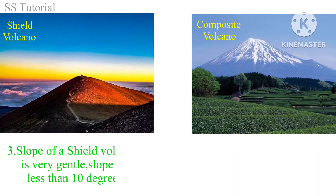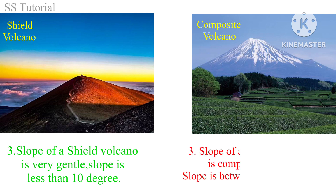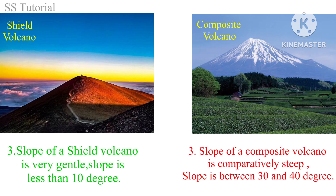As highly fluid lava erupts from a shield volcano, it flows greater distances before it solidifies, which results in a very gentle slope. The slope of a shield volcano is less than 10 degrees. But as highly viscous lava erupts from a composite volcano, it cannot flow greater distances, which results in comparatively steep slopes. The slope of a composite volcano is between 30 and 40 degrees.